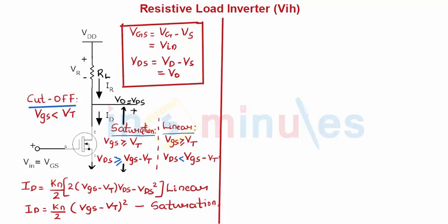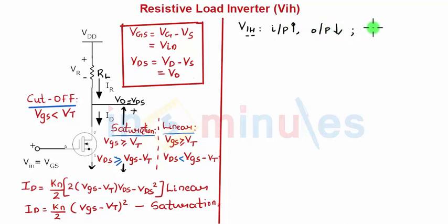Welcome to 'In Five Minutes.' The agenda of this clip is to identify the expression for VIH for a resistive load inverter. VIH is nothing but input high, which means the output is low because it's an inverter. By definition, this is a point on the voltage transfer characteristics where the slope is equal to minus one, i.e., dVout/dVin = -1.